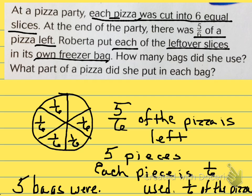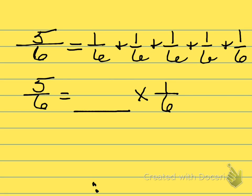That was pretty simple. I think our model showed everything. So there are two ways I can write this. I can write this as a number problem by saying five-sixths is the same as one-sixth plus one-sixth plus one-sixth plus one-sixth plus one-sixth. Or I can write five-sixths as a multiplication problem — a whole number times the unit fraction one-sixth. How many times did I add one-sixth together? You're right: five times one-sixth.